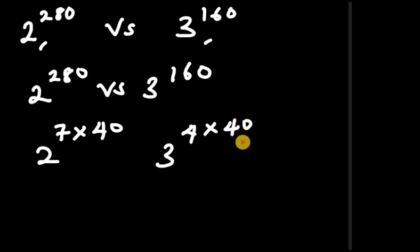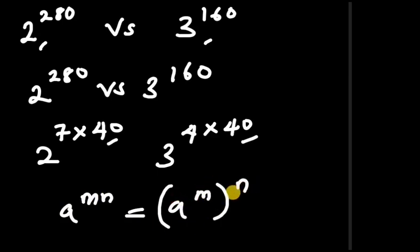Now you can see that we have 40 here and 40 here. If we use the identity that a to the power of mn equals (a to the power of m) to the power of n, we can rewrite these expressions.